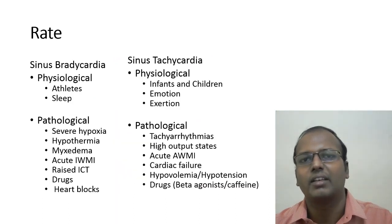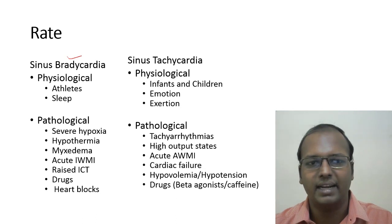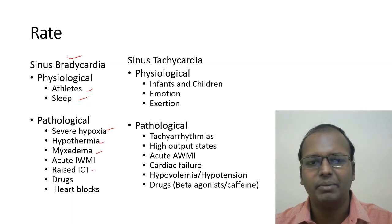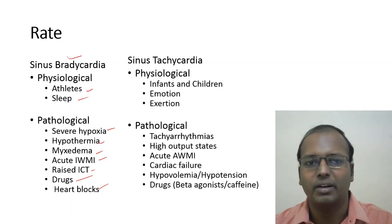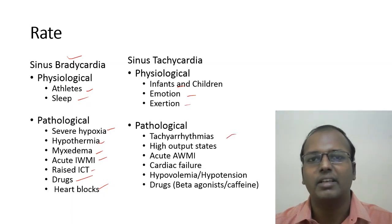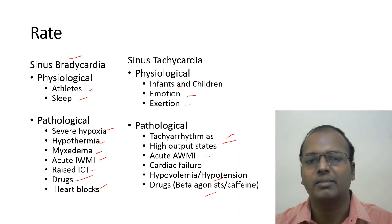Pulse rate more than 100 is tachycardia; less than 60 is bradycardia. Sinus bradycardia occurs physiologically in athletes and sleep, and pathologically in hypoxia, hypothermia, raised ICP, hypothyroidism, inferior MI, drugs, or heart blocks. Sinus tachycardia occurs physiologically in infants, children, emotion, or exertion, and pathologically in tachyarrhythmias, high output states, cardiac failure, hypovolemia, hypotension, and beta-agonist drugs or caffeine.